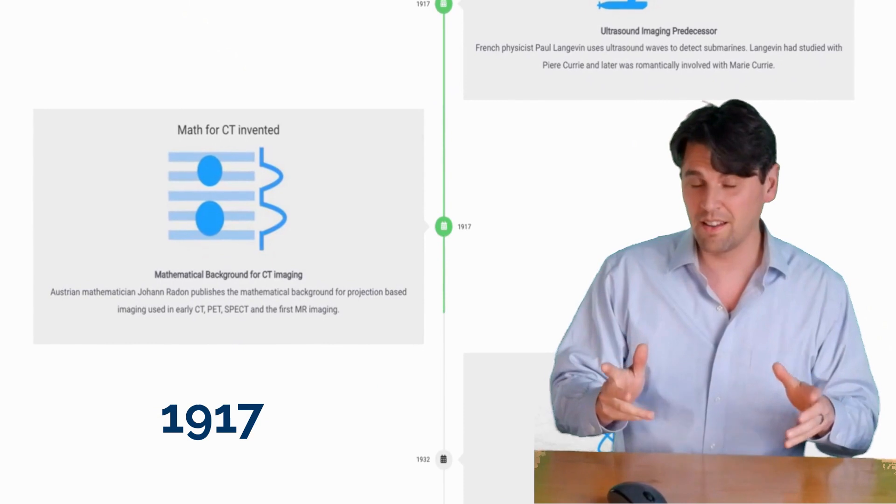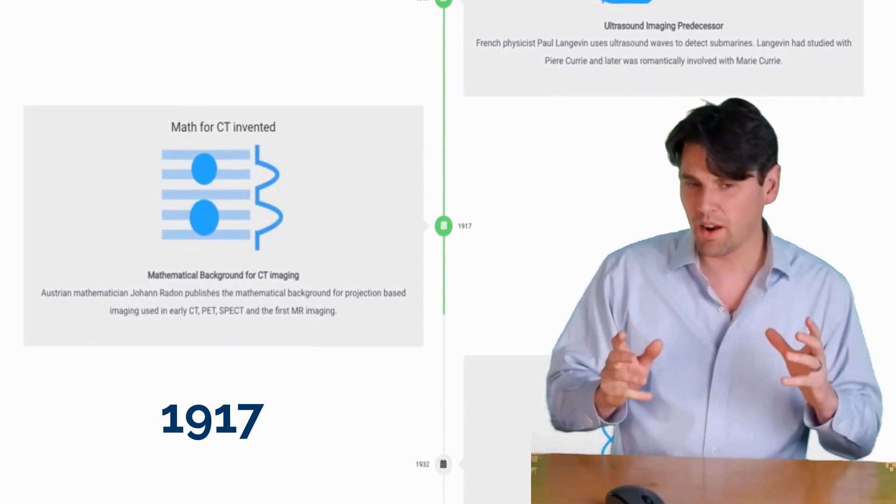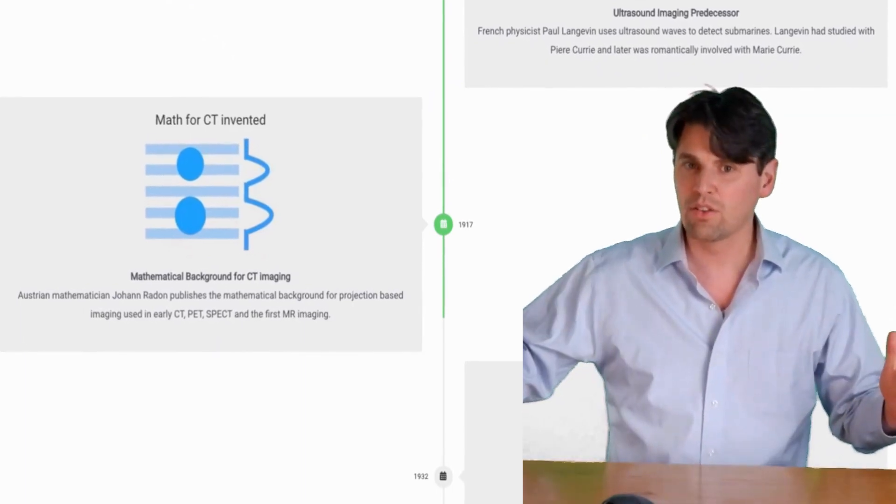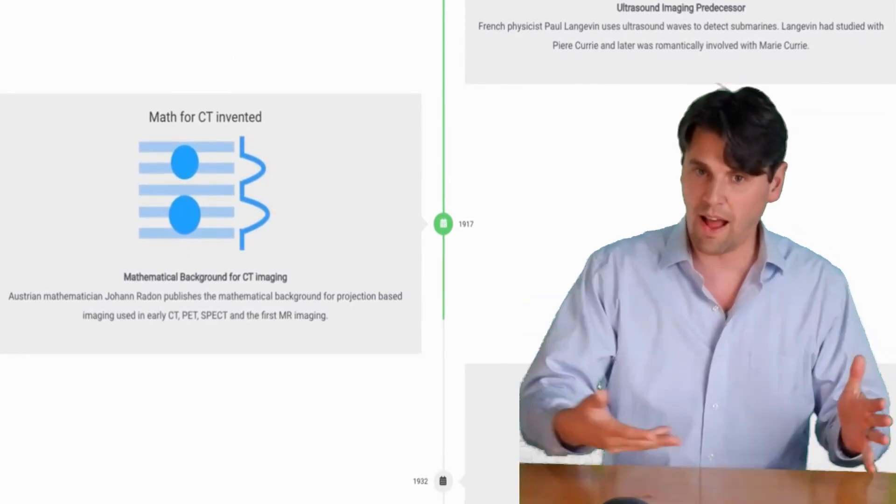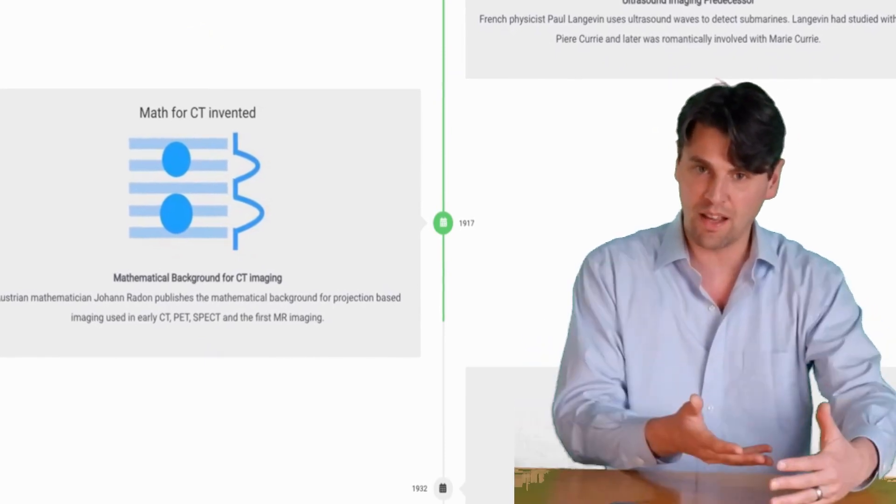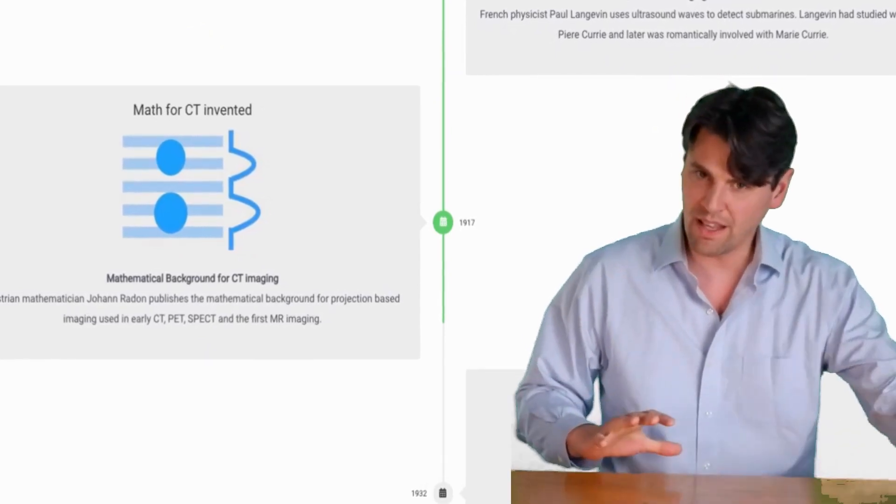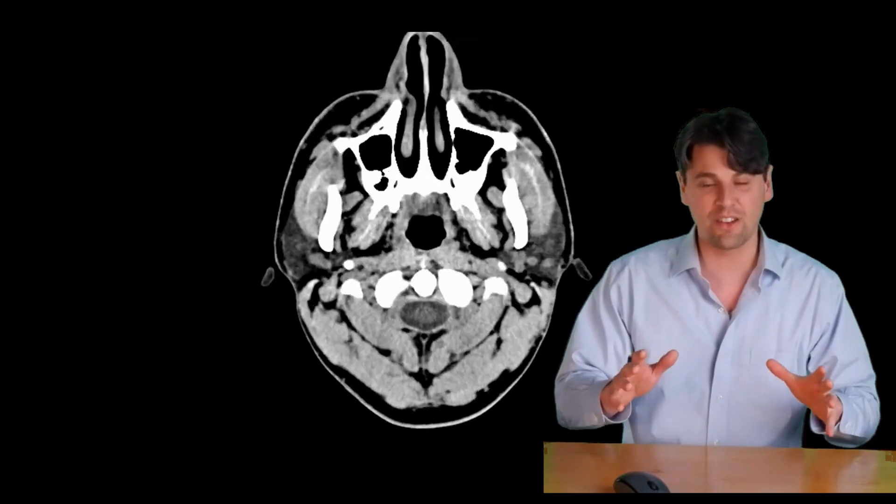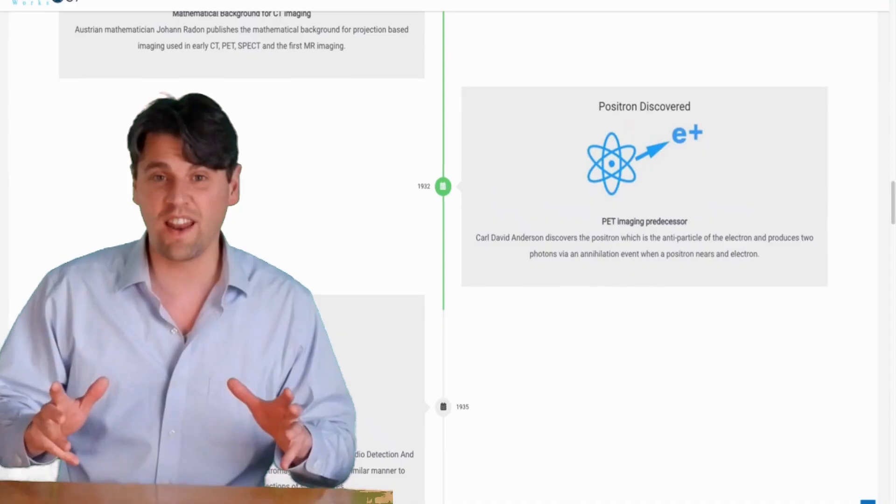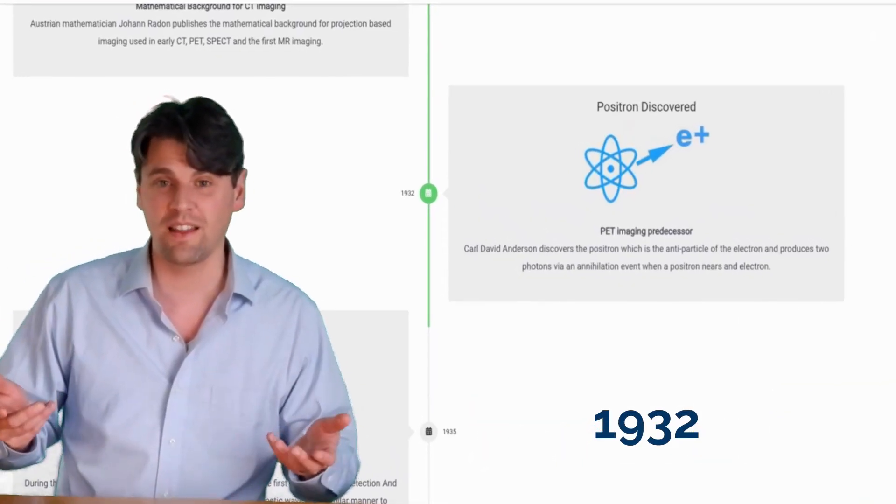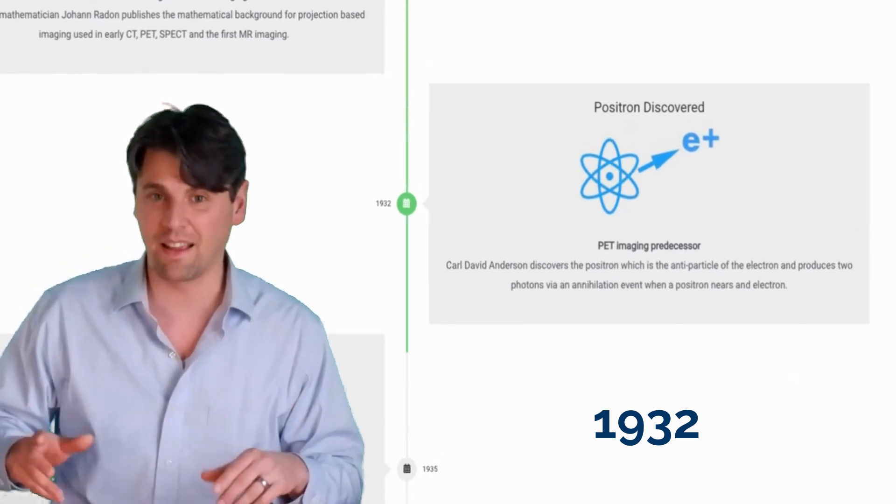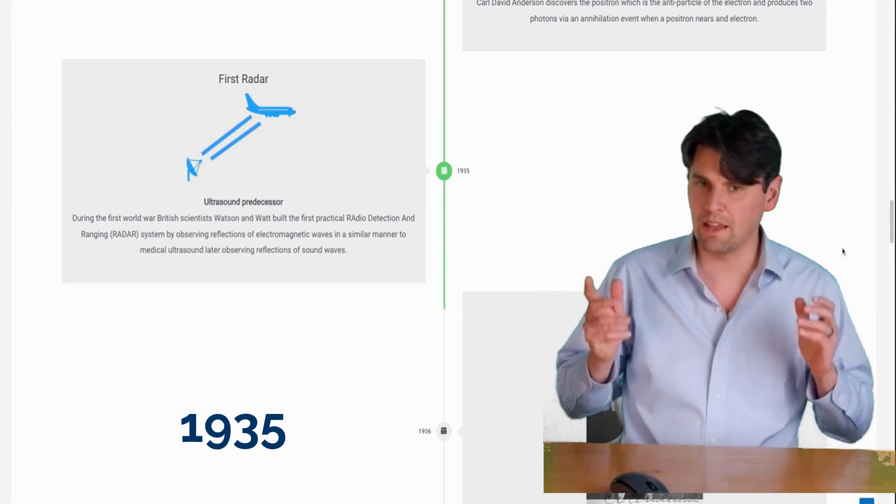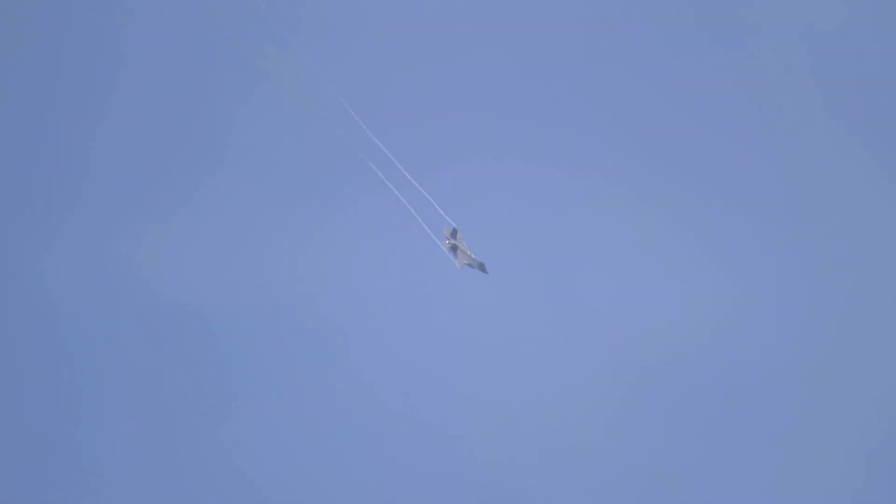That same year, totally unbeknownst to one another, there was actually a mathematician, Radon, who was working on formulas that demonstrated it was possible if you had so-called projections through an object or a shadowgram through an object, that you could actually reconstruct that image from just those projections. This is actually the basis for CT image reconstruction. David Anderson then discovered the positron—that's the P in PET scanning, positron emission tomography. Significant improvements were then made in radar, which is actually just the air version of ultrasound.